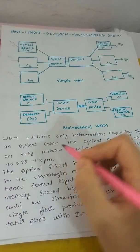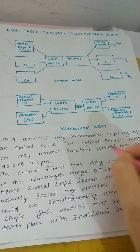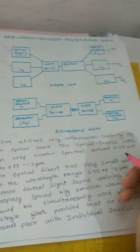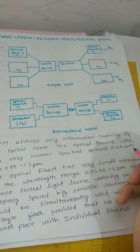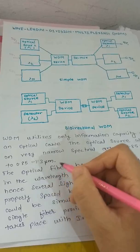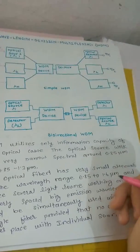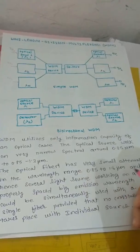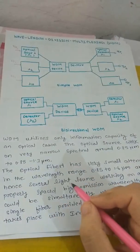WDM utilizes the information capacity of an optical cable. The optical sources work on a very narrow spectrum around 0.85 to 1.3 micrometers. The optical fiber has very small attenuation in the wavelength range 0.85 to 1.6 micrometers, and hence several